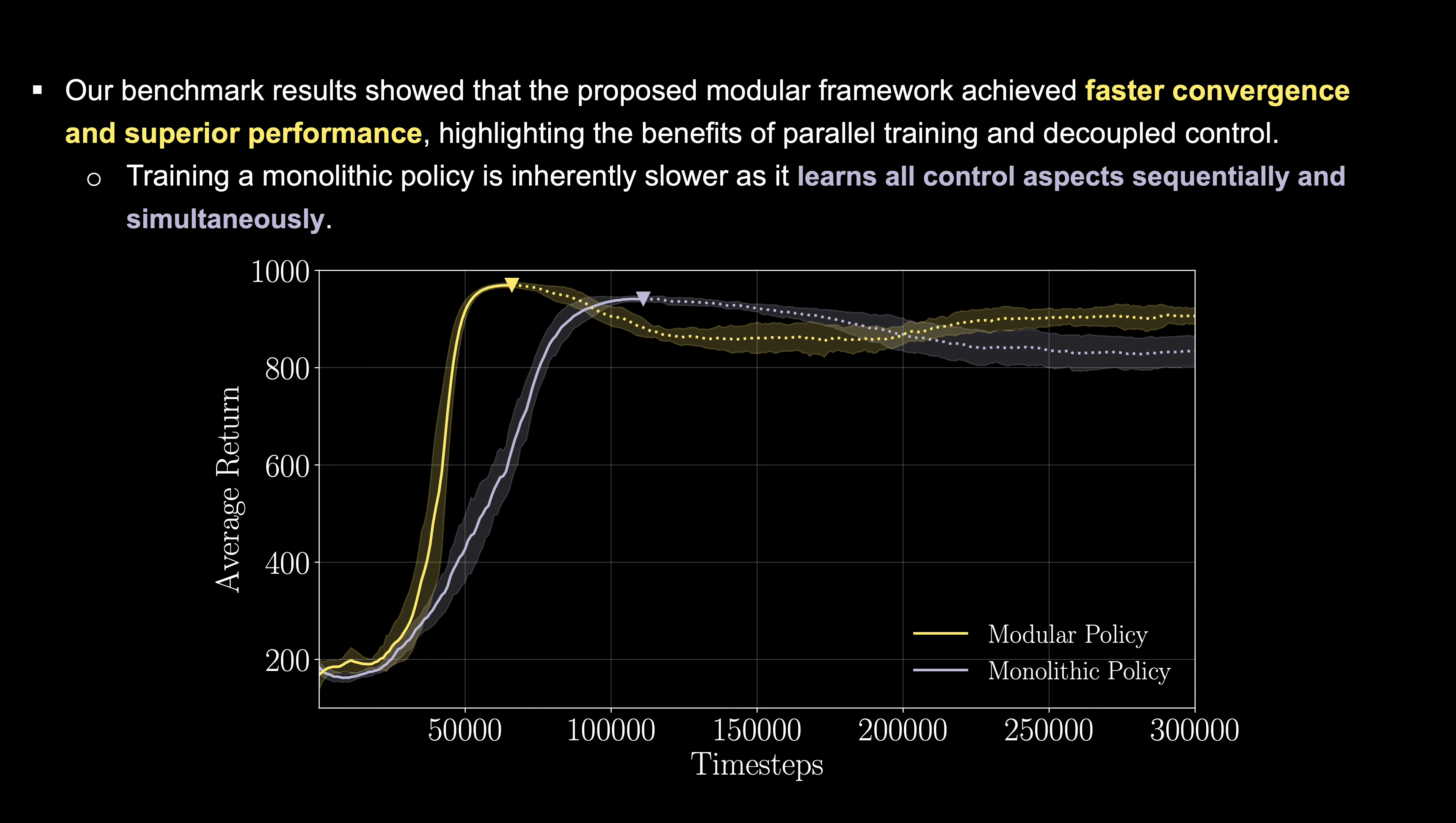It achieves faster convergence and superior performance compared to the monolithic policy. The parallel training of specialized modules leads to more efficient learning, whereas the monolithic policy has to learn all aspects of control sequentially and simultaneously, resulting in slower training.